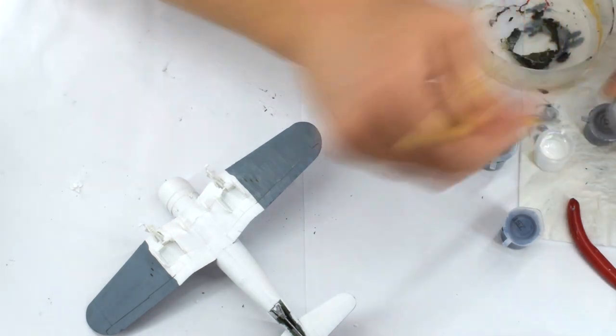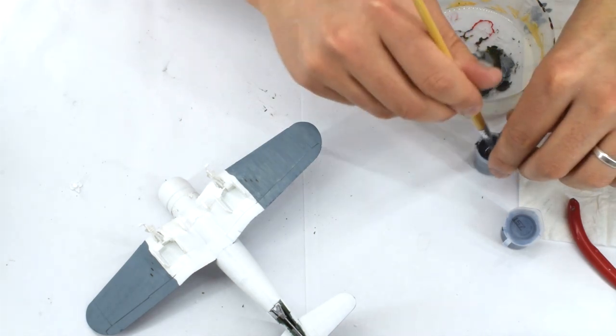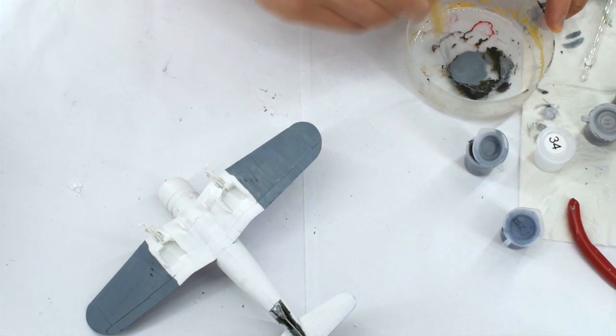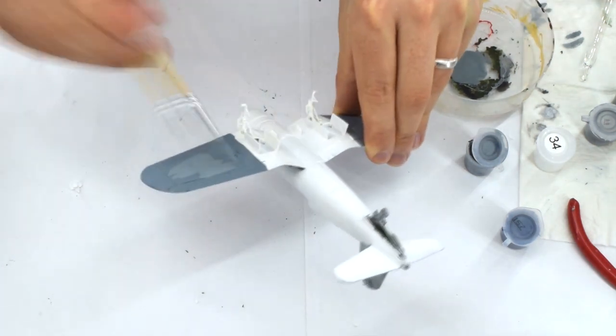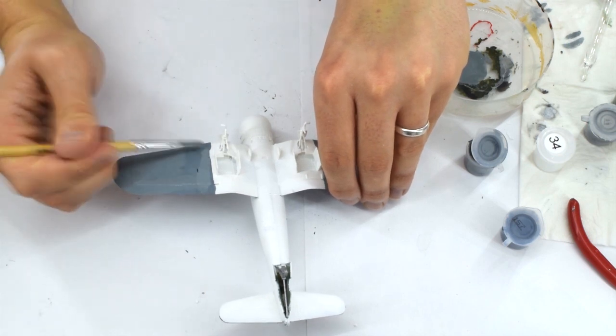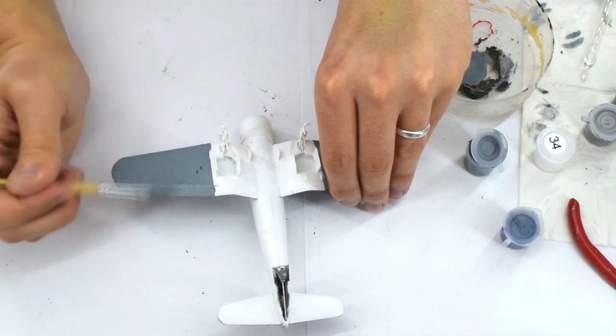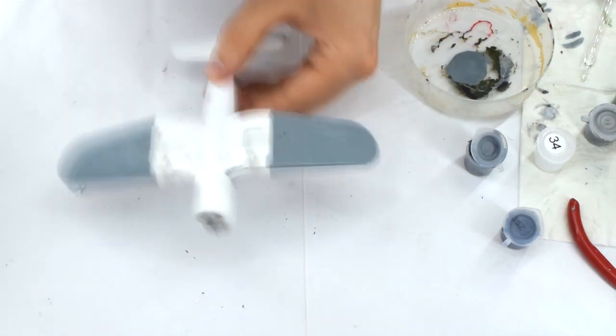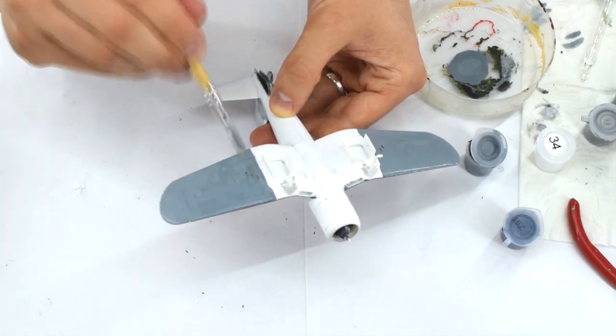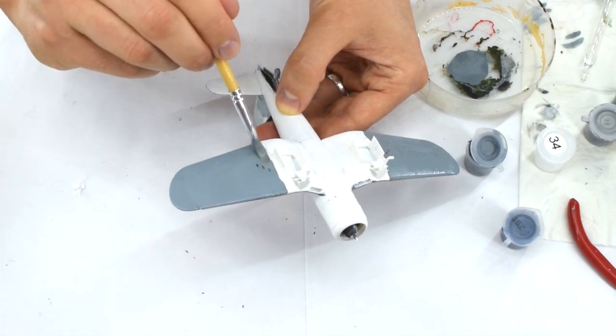You can see here that I'm mixing Humbrol 34 matte white acrylic with an unknown blue acrylic. I made it a little lighter and thinned it down, and it was used on the panels on the lower wings and also the lower sides of the fuselage. I decided to do this all freehand which took some time and patience, but you could use masking tape to help get some nice neat lines.